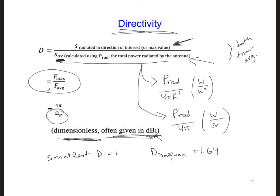And if we want to convert this 1.64 quantity to units of dBi, we would take 10, log base 10, of 1.64. Now technically we're dividing by 1 because it's relative to the directivity of an isotropic antenna. And that would be equal to 2.15 dBi.